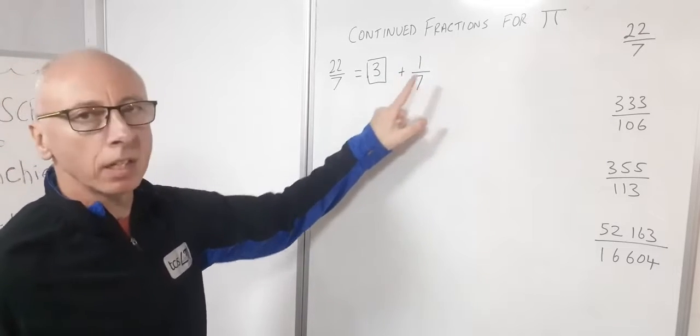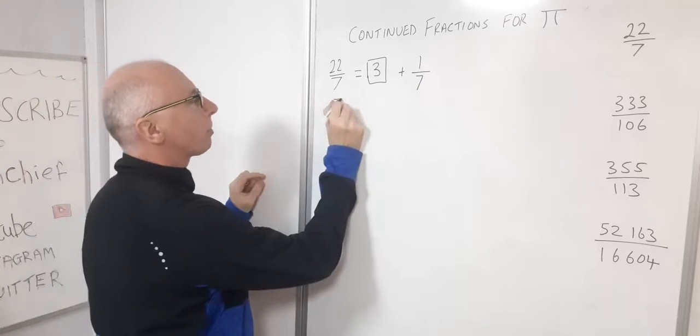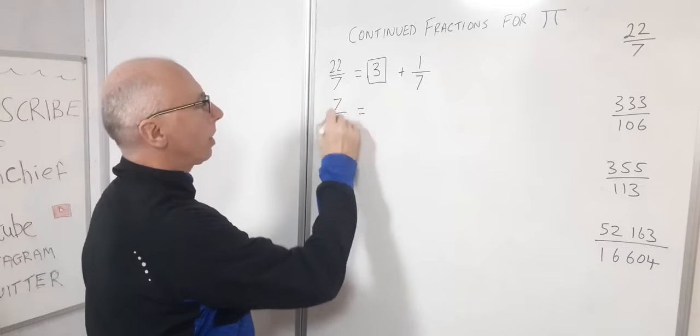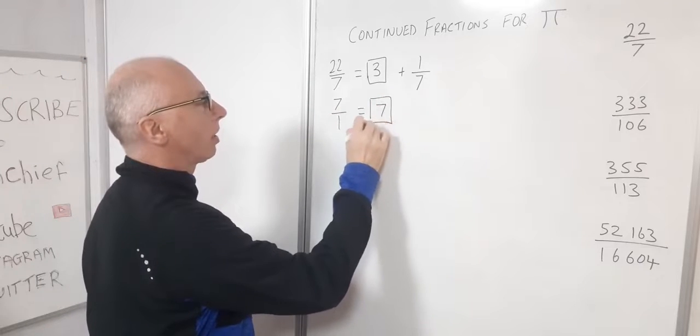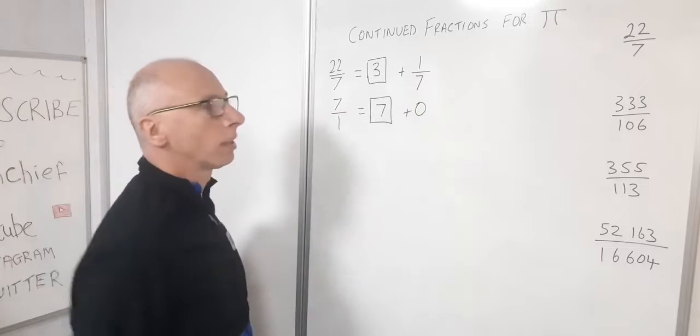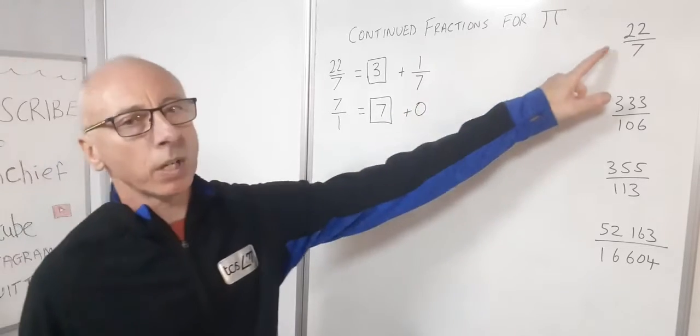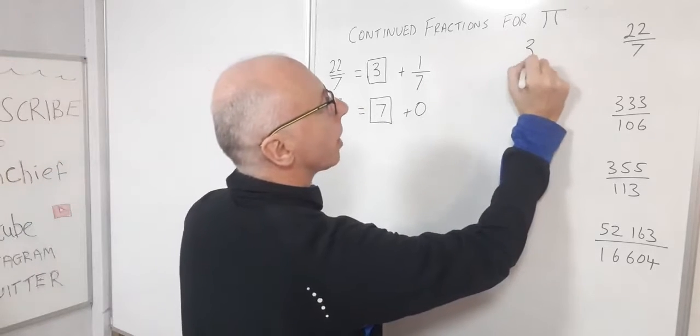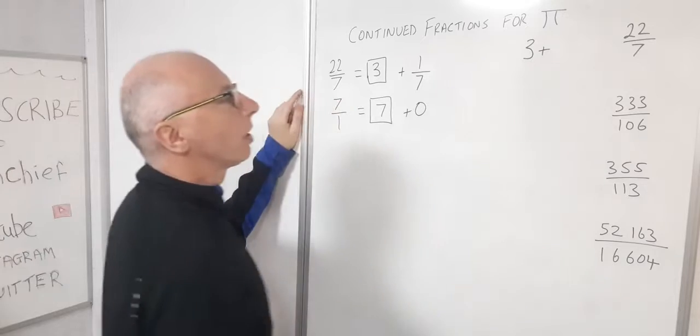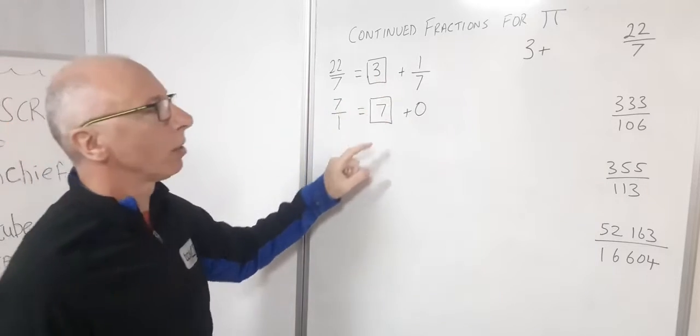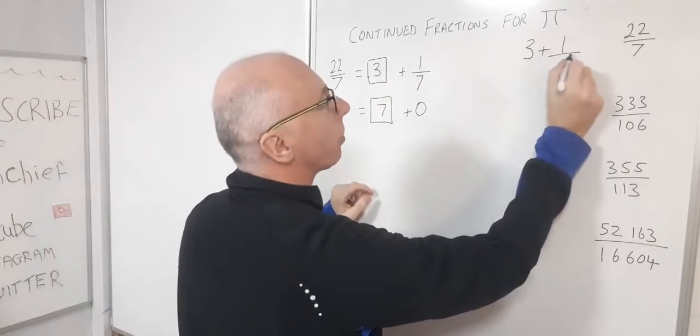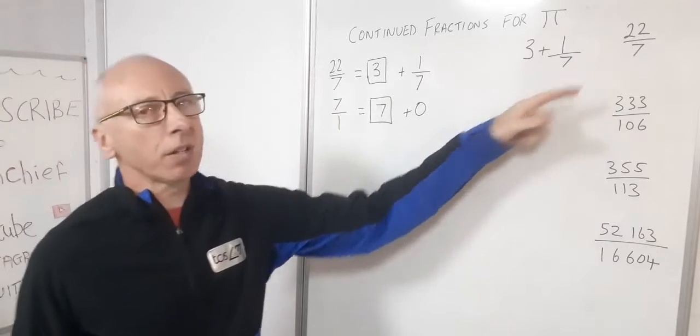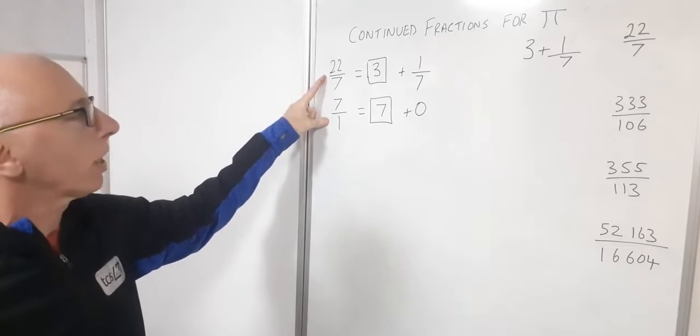Now we take our remainder 1 over 7 and write it as a reciprocal, so 7 over 1. Now 7 over 1, we know this gives us an integer with remainder 0 so we stop. Therefore we can write 22 over 7 in this manner. So we write 3 plus 1 over 7. Well we pretty much knew that from the start, but it's good to get a little insight into how the continued fractions work.